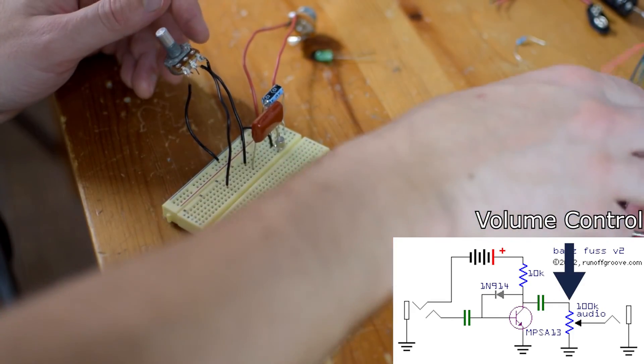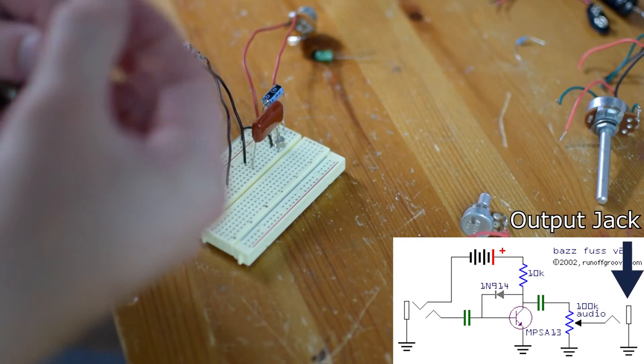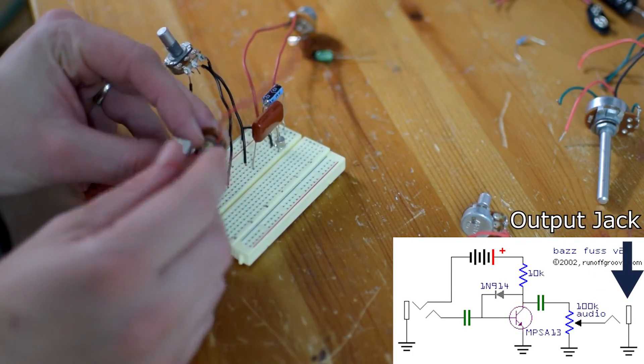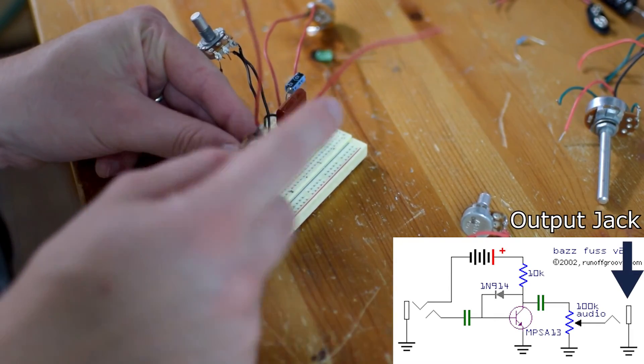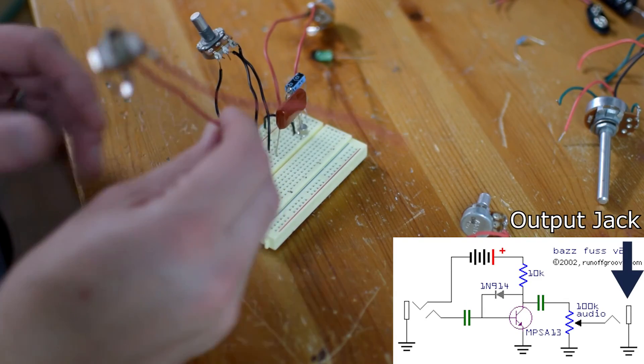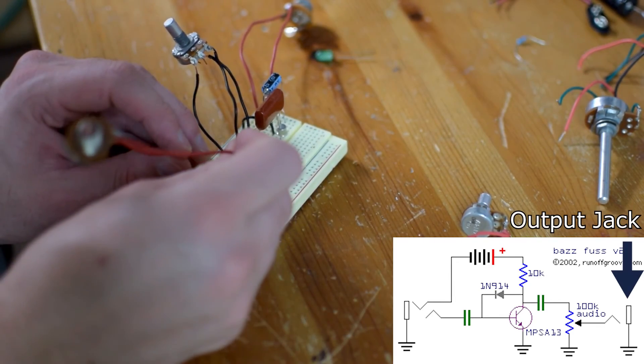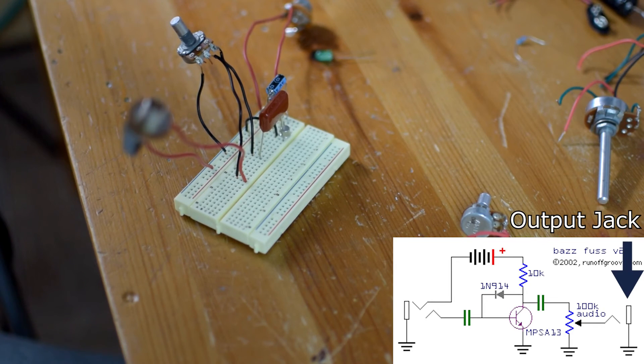And then we can use our output jack. Same thing between these two connection points. This guy here is connected to the sleeve, or to the tip. That's going to be our ground. So again, just putting that on our blue ground bus, and then this one is tying in right exactly where I left off. So, okay, so we should have a working Baz Fuss circuit here.